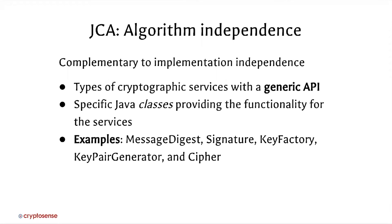In JCA, we also have algorithm independence. We might want to change the algorithm used for particular things — sometimes called crypto agility. Instead of specifying encryption with AES, for example, we offer a cipher that can be instantiated with different algorithms, making it very easy to change the algorithm without deep changes to the code. We can figure out what ciphers are supported by a particular provider programmatically. Running that code on Java 8 shows a whole bunch of ciphers, including AES — the most widely used symmetric block cipher — but also historic ciphers like Blowfish, the old RC4-compatible ARCFOUR stream cipher, Triple DES, and password-based encryption algorithms under PKCS5 including legacy constructions like PBE with MD5 and single DES.